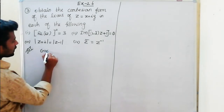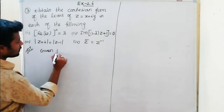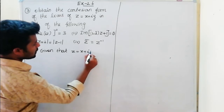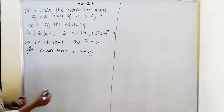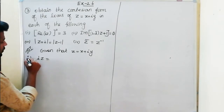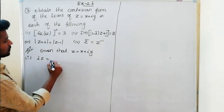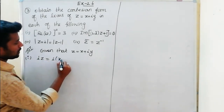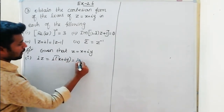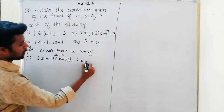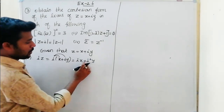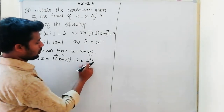Given that z equal to x plus iy. First, find the imaginary part of iz. So i into z equals i into x plus iy, which gives terms of ix and i square y. Now i square equals minus 1.